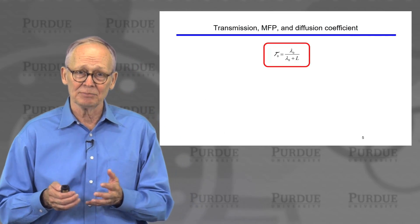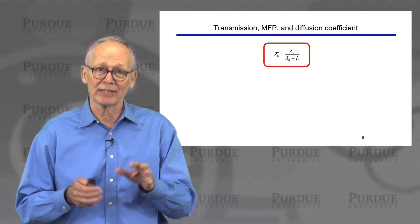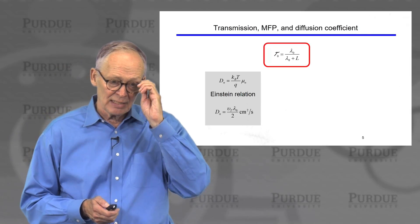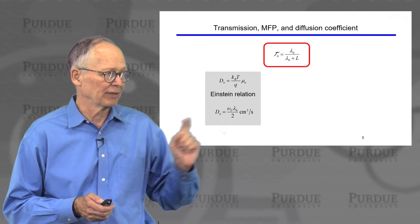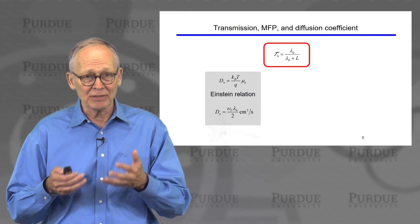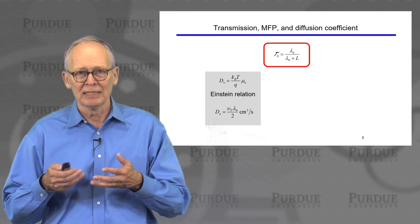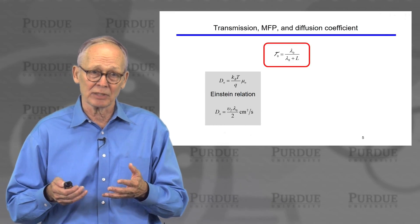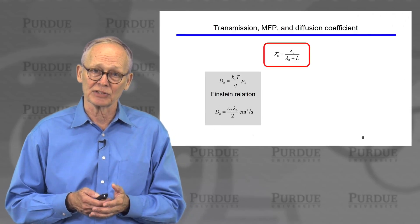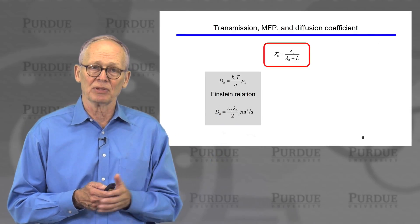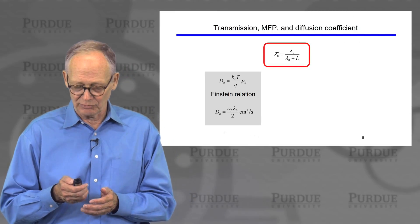We discussed the key parameters in the Landauer approach. The transmission is a key parameter. It's related to the mean free path for backscattering and the length of the conductor by a very simple expression. There is also a relation between the diffusion coefficient and the mean free path for backscattering. We can use the Einstein relation to determine the diffusion coefficient from the mobility, and then that diffusion coefficient is simply related to the mean free path for backscattering, allowing us to estimate it.